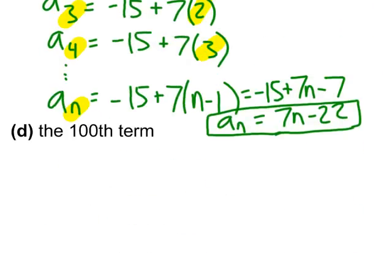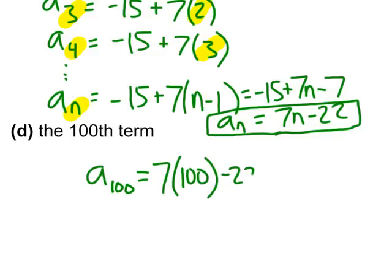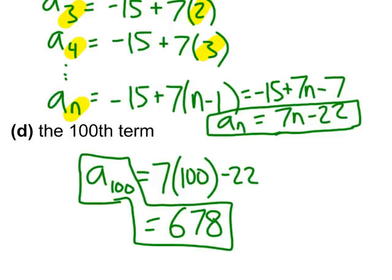For the 100th term, with my explicit formula, I want to point out that if we had tried to use the recursive formula, finding the 100th term would be a long process because I'd first have to find the 99th term and before that I'd have to find the 98th term. So recursive is not as convenient. But with this explicit rule, I can simply say a sub 100, that's 7 times 100 minus 22, which equals 700 minus 22 or 678. So there you have it. That is our arithmetic sequence.